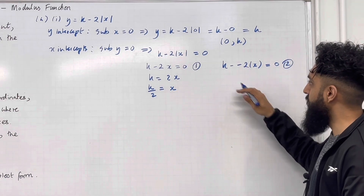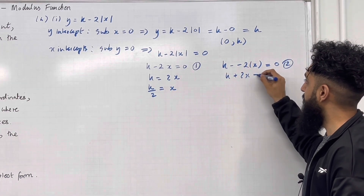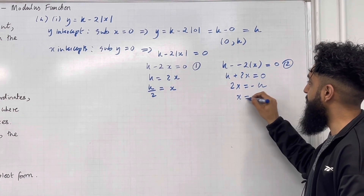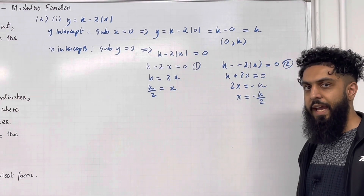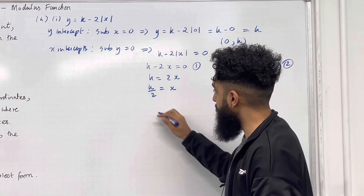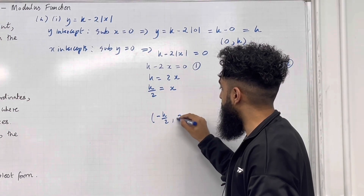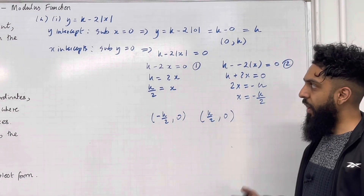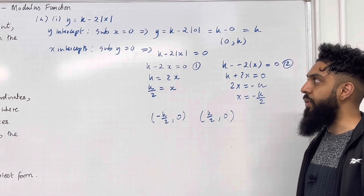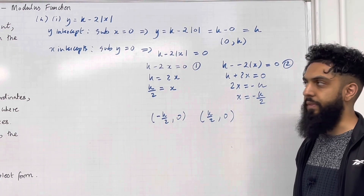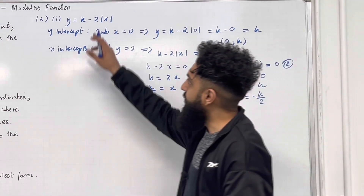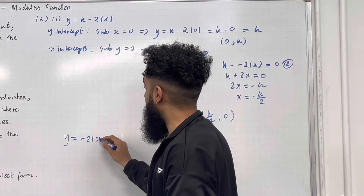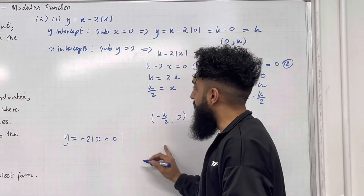Moving on to the second equation, k − (−2x) = 0, which simplifies to k + 2x = 0, so 2x = −k, hence x = −k/2. The x-intercepts are (−k/2, 0) and (k/2, 0). I can rewrite the equation as y = −2|x + 0| + k to find the vertex.